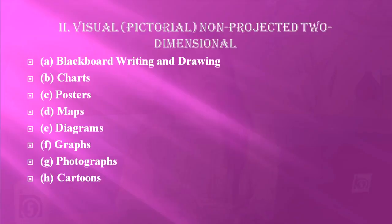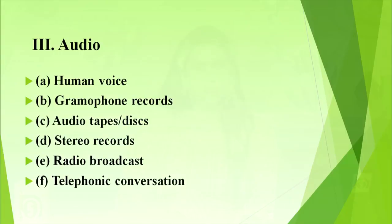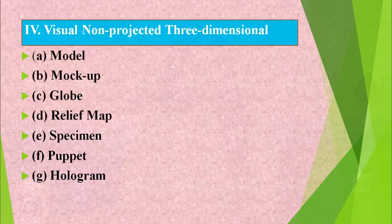Under visual, pictorial, non-projected, two-dimensional comes blackboard writing and drawing, charts, posters, maps, diagrams, graphs, photographs, and cartoons. The third category is audio, which includes human voice, gramophone records, audio tapes and discs, stereo records, radio broadcast, and telephonic conversation. The fourth category is visual, non-projected, three-dimensional aids, which includes models, mock-ups, globes, relief maps, specimens, puppets, and holograms.